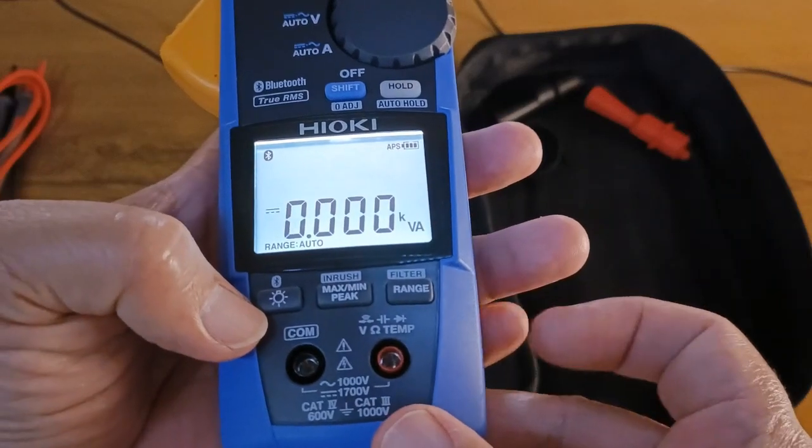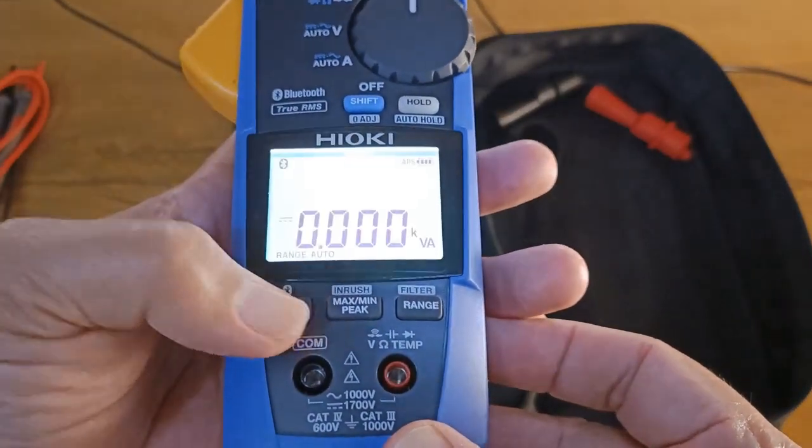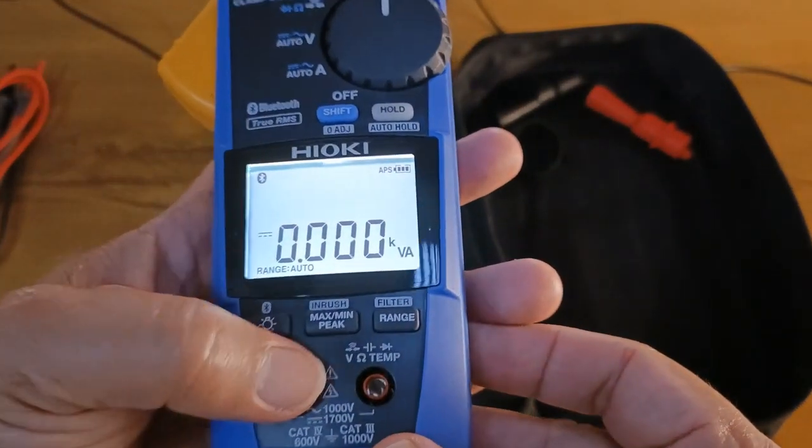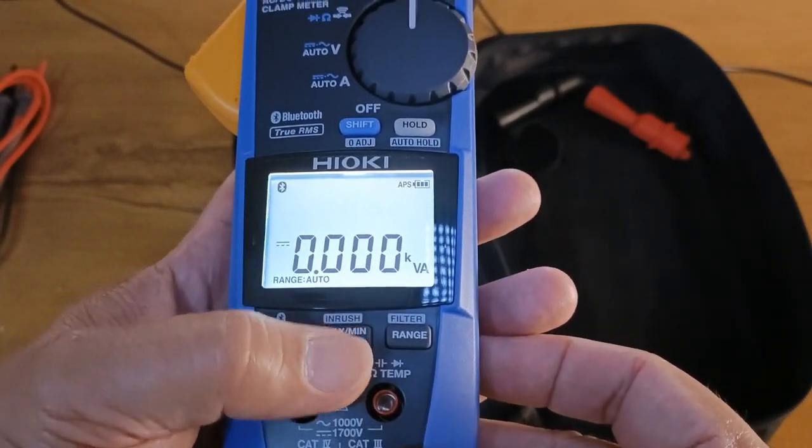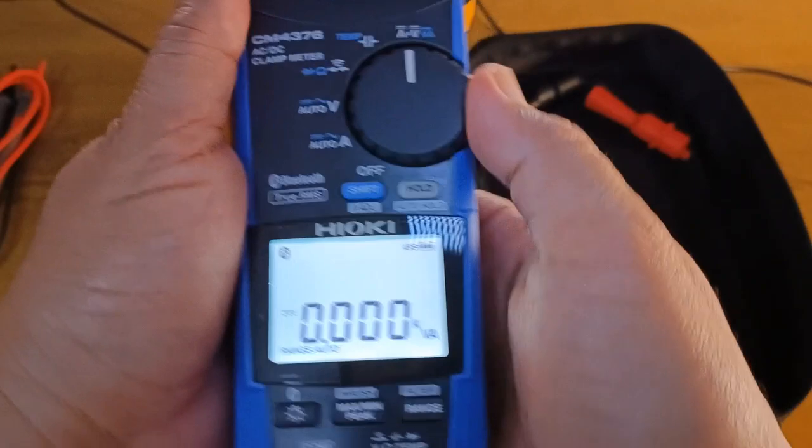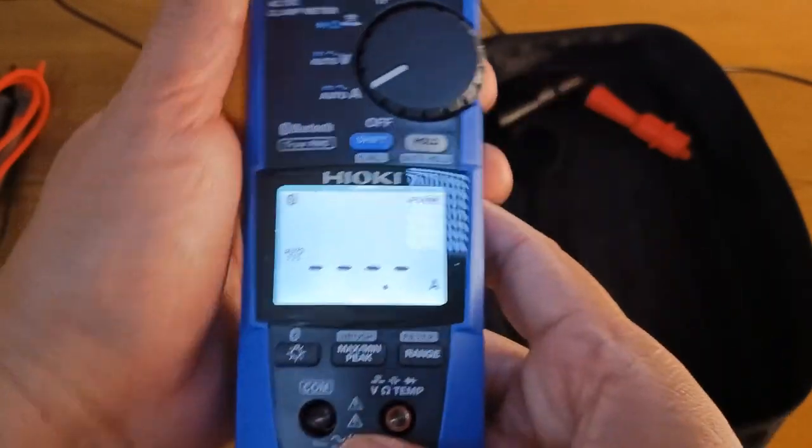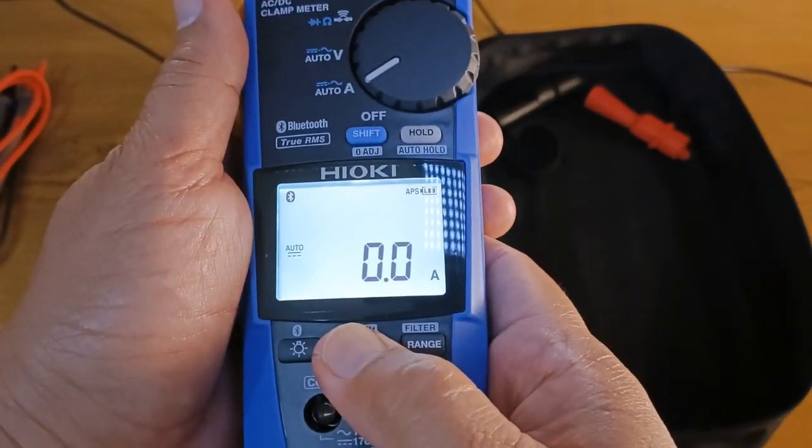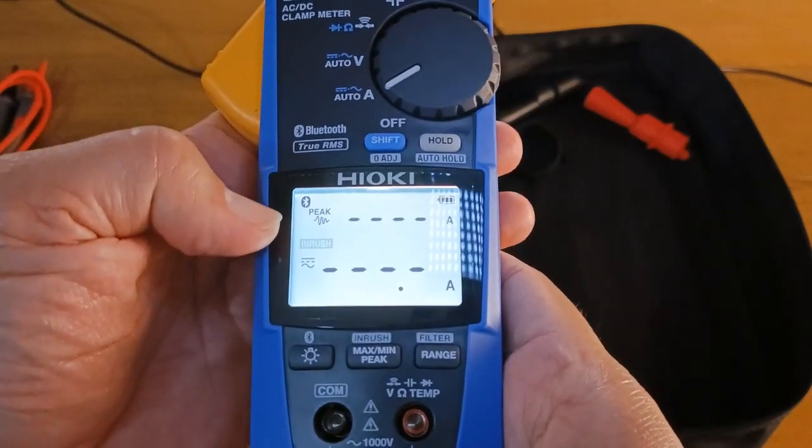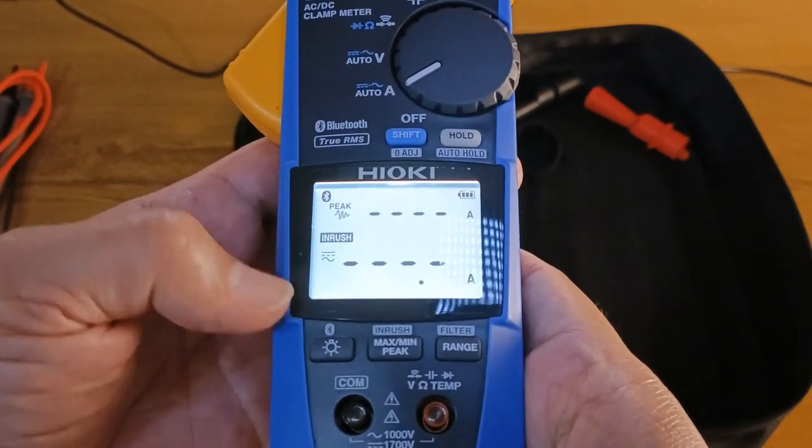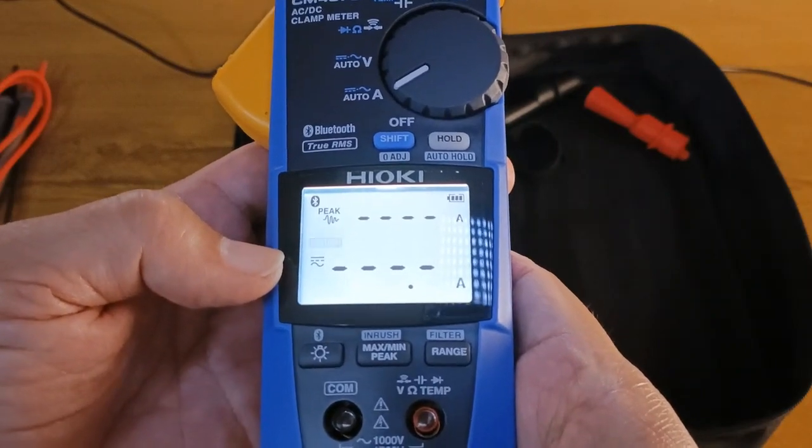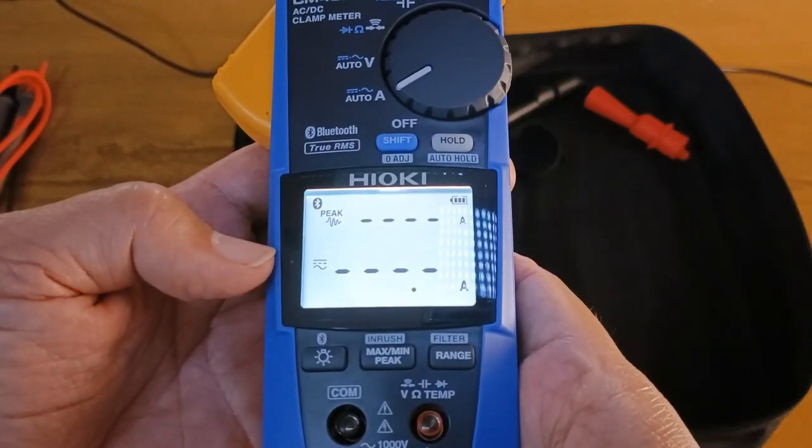The screen of the CM4376 has a very uniform backlighting. It has buttons also for mean, maximum and peak values, including inrush current. Now the inrush current has two displays: it can display the instantaneous peak value of the waveform and the RMS value of the inrush current, so you have two values that you can use.